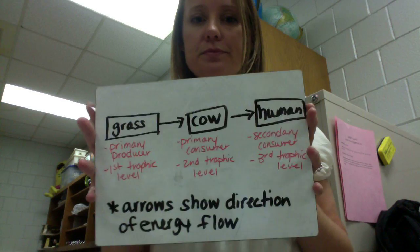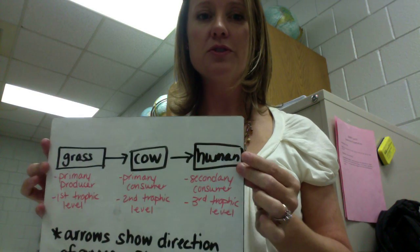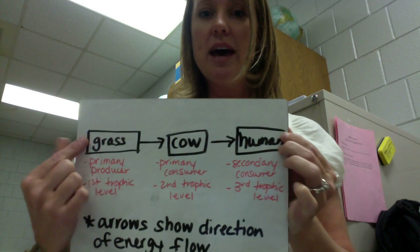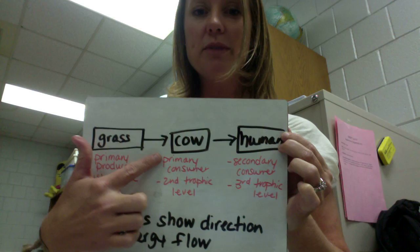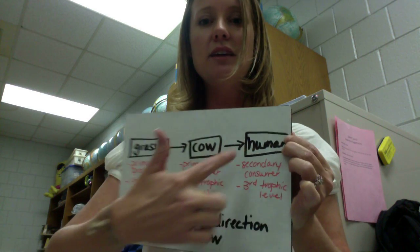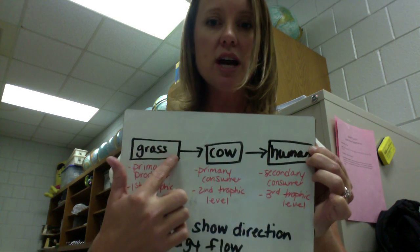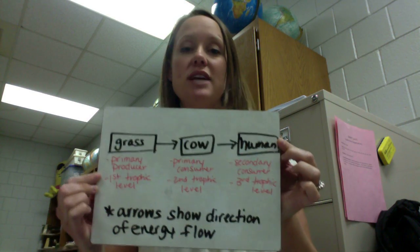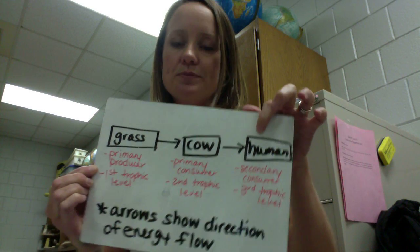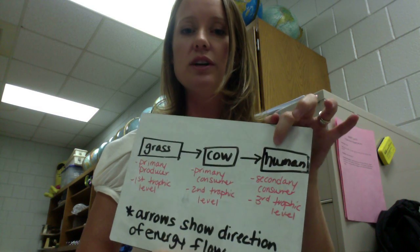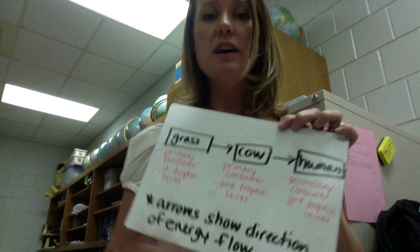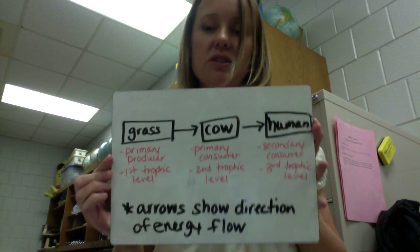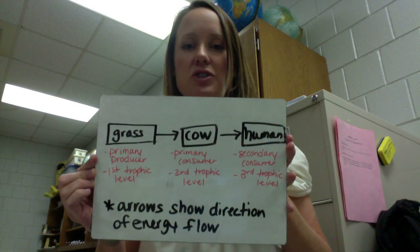If we put that all together into a food chain, our primary producers are our first trophic level — in this example we see grass, which is photosynthetic. Then we have an herbivore at our second trophic level, our primary consumers; in this example, cows eat the grass. If a human eats the cow — enjoy your hamburger — the humans are secondary consumers at the third trophic level. When drawing food chains and food webs, anything in a box in a flow diagram is considered a storage, and the arrows represent energy flow, showing what direction the energy is flowing — not what is eating what, but how energy is moving through the trophic levels.